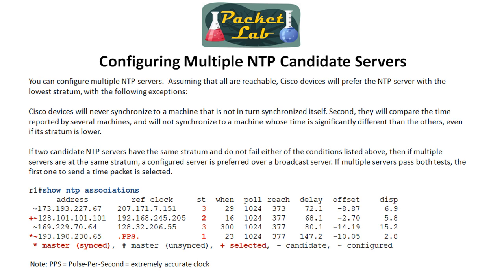Now if they have the same stratum — say you have two candidate stratum one servers — it's just going to pick the one it gets communication from first. There is a way to override that, which we'll show you in a couple of slides.